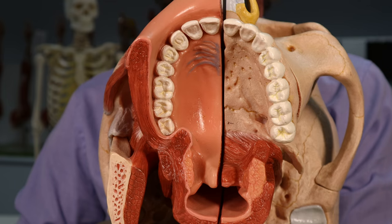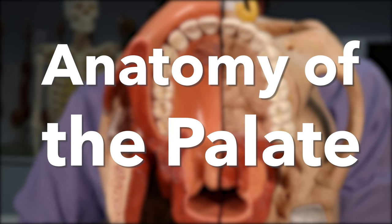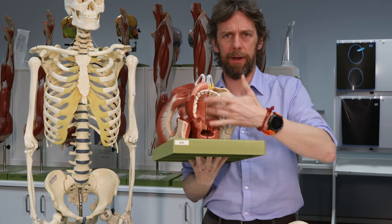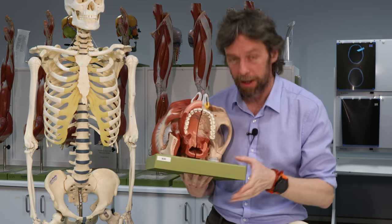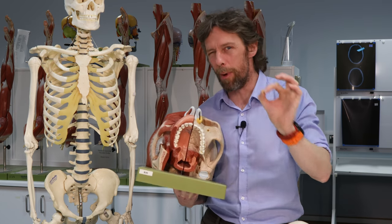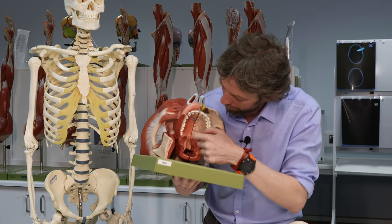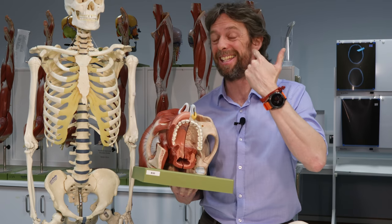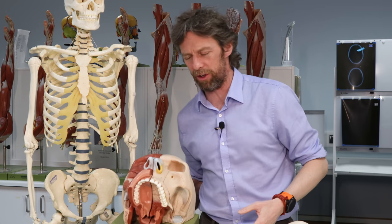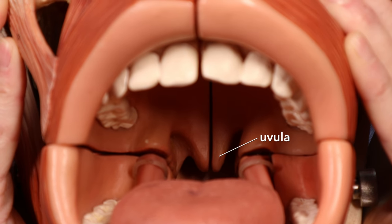The palate is the roof of the oral cavity. It has two parts: a hard palate and a soft palate. The hard palate is bony. You can feel this yourself — run your tongue along the hard palate and it ends posteriorly, then becomes muscular. Eventually it ends as the uvula, the dangly bit at the back.